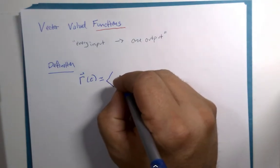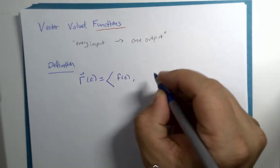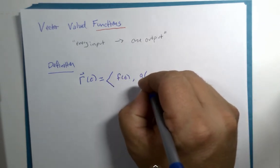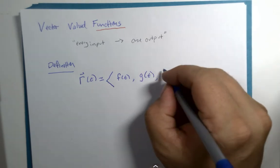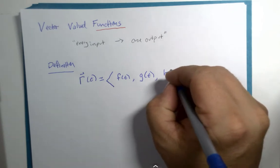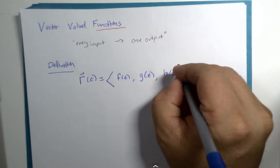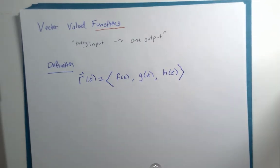So the first component is some function of t and the second component is some function of t. If there are three or more components, then there would be functions for those as well. Here would be a common notation for defining this.